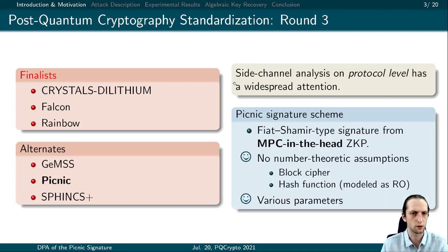It is one of the most important evaluation criteria of the NIST PQC standardization process. In this work, we focus on Picnic, which is an alternate candidate in the NIST PQC project.